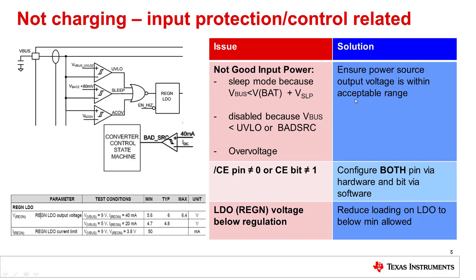The first bullet point is that the battery charger may be in sleep mode because the input voltage, or V bus, is less than the battery voltage plus V sleep — a headroom voltage of 80 millivolts in this example. The second bullet point is that the charger may be disabled because the V bus is under the UVLO threshold, which stands for undervoltage lockout. You want to make sure that the input voltage is above this threshold when charging. Lastly, you may have an overvoltage situation where there is too much voltage on the input, and the battery charger shuts down to keep the device safe.